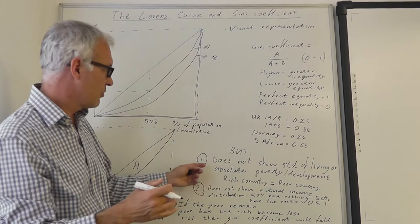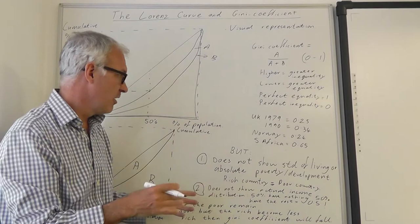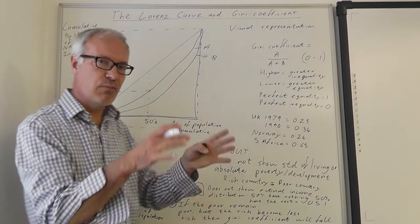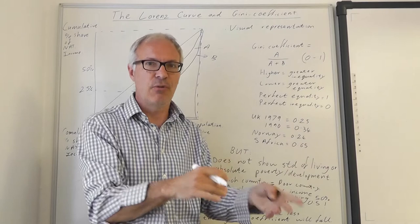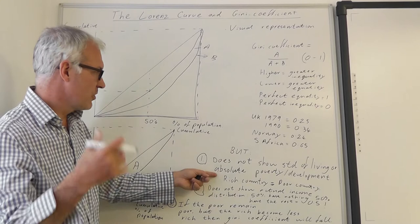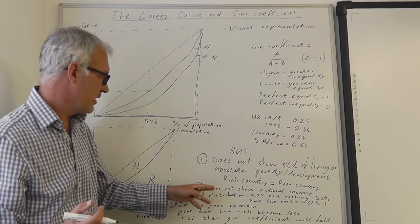However, the Gini coefficient does have a few problems in terms of measuring inequality. First of all, it doesn't actually show the standard of living of a country, the extent of development, or the level of absolute poverty. You could have a very poor country with terrific levels of absolute poverty with the same Gini coefficient as a very rich country. So it doesn't indicate the standard of living or the level of development.